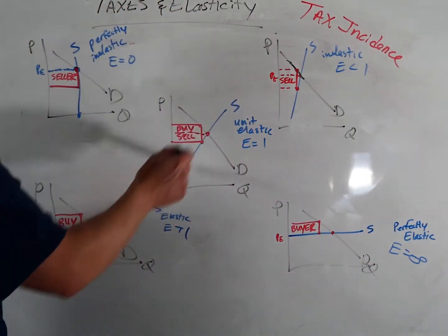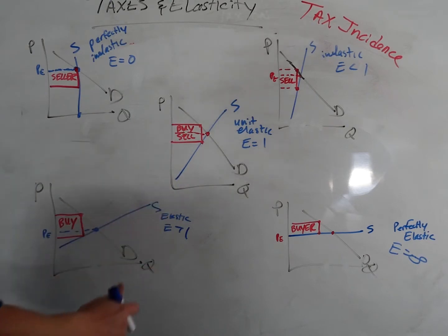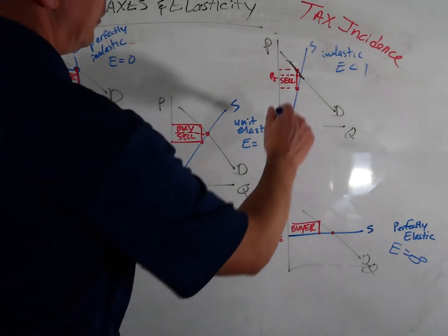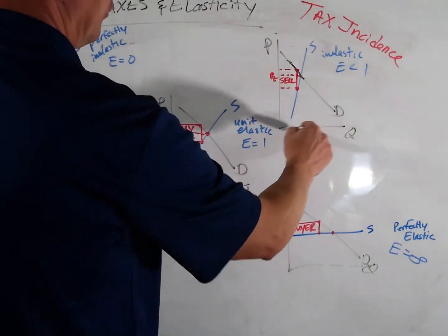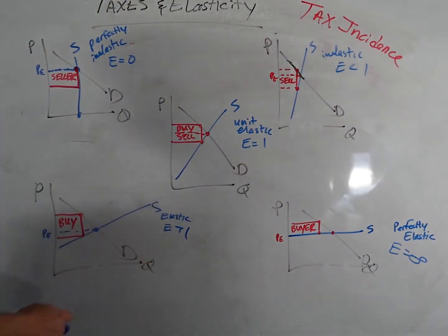We have unit elastic, which is split right down the middle, 45 degrees here on either side. Then we have an inelastic supply, not a lot of movement in quantity here, less than one. We have an elasticity greater than one on a supply that's fairly elastic.